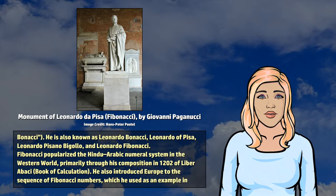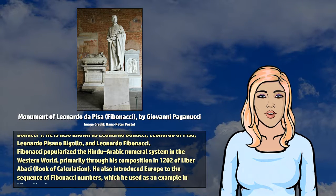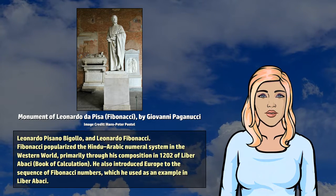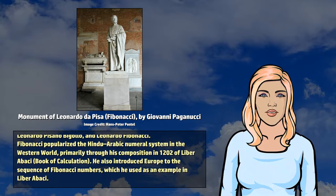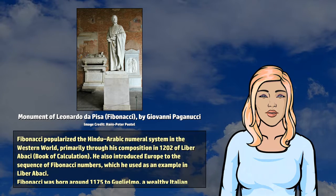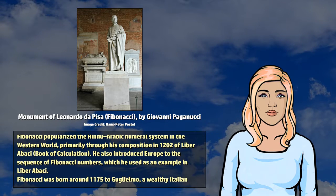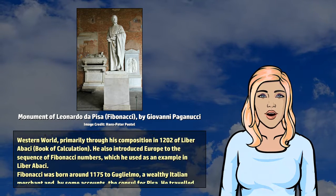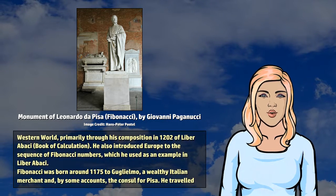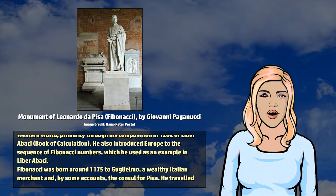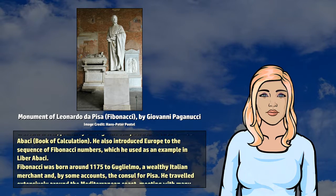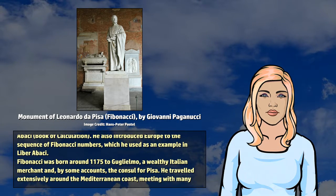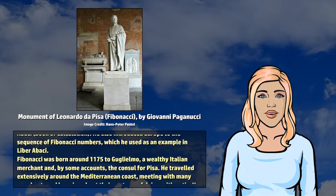Fibonacci popularized the Hindu-Arabic numeral system in the Western world, primarily through his composition in 1202 of Liber Abaci, Book of Calculation. He also introduced Europe to the sequence of Fibonacci numbers, which he used as an example in Liber Abaci.